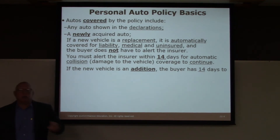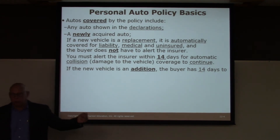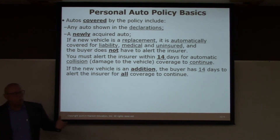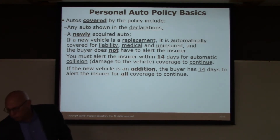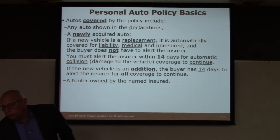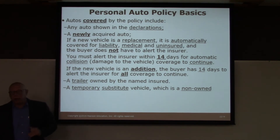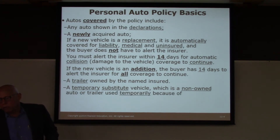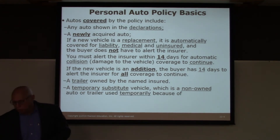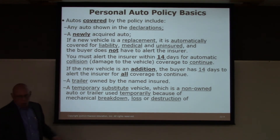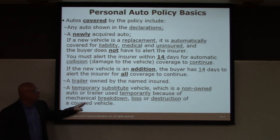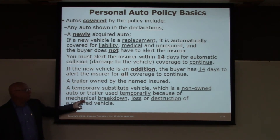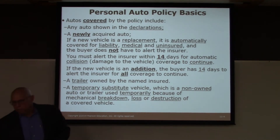If the new vehicle is an addition — say husband and wife have one car each and now a third car is added for a child — then you have 14 days to alert the insurer for all coverage to continue. Even though you have 14 days, I would do it immediately. Other covered autos include a trailer owned by the named insured, and a temporary substitute vehicle — a non-owned, rented vehicle used temporarily because of mechanical breakdown, loss, or destruction of a covered vehicle. So, if your car breaks down and you are using a vehicle while your car is being repaired, it is covered under the PAP.